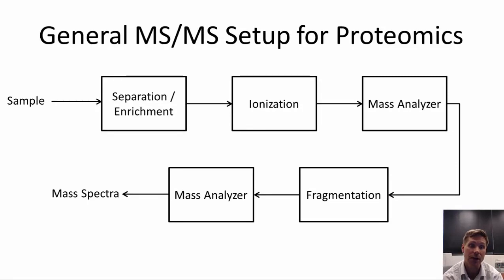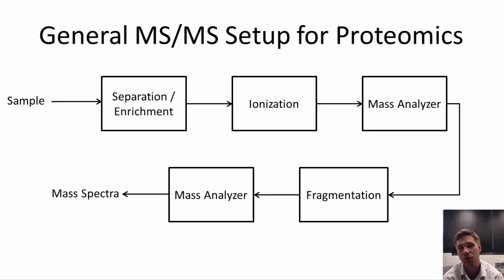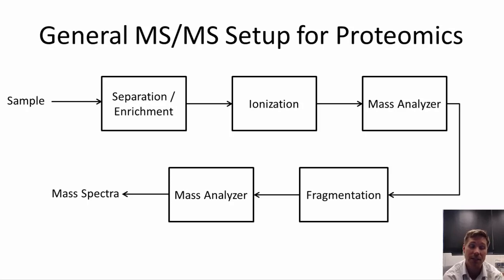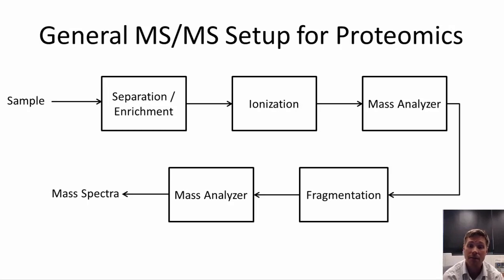Starting with a sample from either tissue or cell culture where you've isolated proteins, you typically separate and enrich those proteins based on the types of things you're looking for. This separation and enrichment can be quite extensive. One very common way to separate proteins is by molecular weight, just as in a western blot, and then analyze different molecular weight bands to reduce the complexity of the sample.